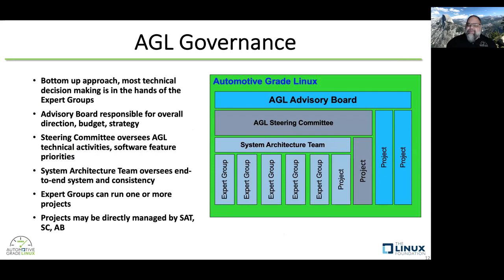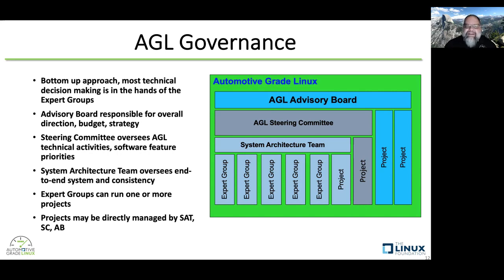AGL basically takes a bottom-up approach. Most technical decision-making is in the hands of our expert groups. The advisory board is responsible for the overall technical direction, budget, and strategy. The steering committee oversees the technical activities. The system architecture team looks after the end-to-end system architecture and consistency between the expert groups, as well as making decisions on which Yocto version we should use and BSP updates — those system integration type issues mostly rest with the system architecture team. The expert groups can run one or more projects and they all meet about every other week.